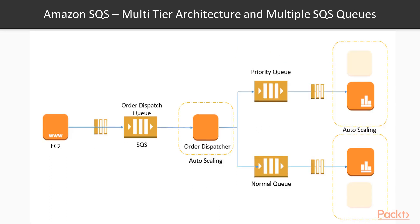With multiple queues in the mix, you can easily adapt to changes in business requirements. For example, you can use Amazon SQS to create multiple queues to enable prioritization of your ordering process. If you wish to implement a priority system where orders placed over a thousand dollars are handled with higher priority, you could introduce a new priority queue. This will not disrupt the standard workflow between the web tier and app tier, other than ensuring higher priority orders get processed first.